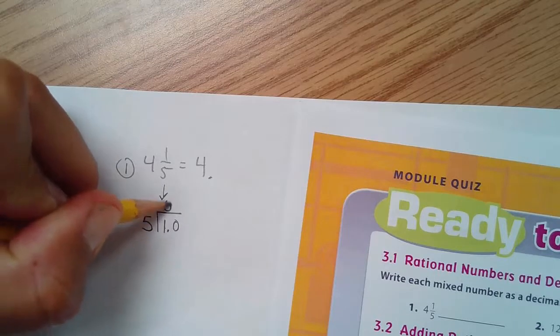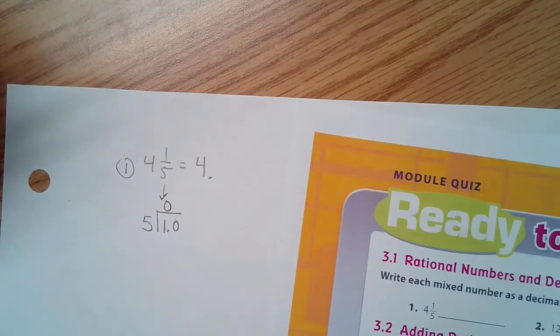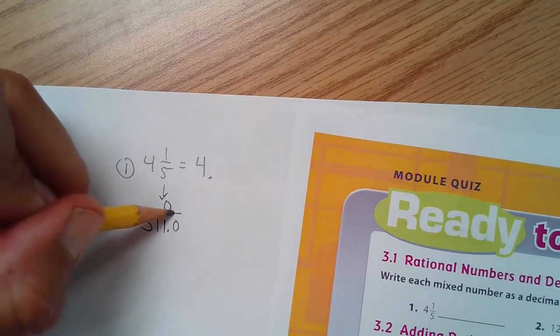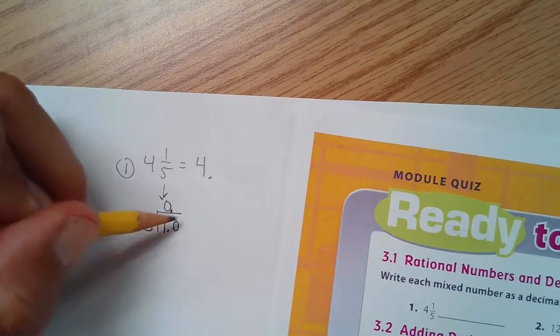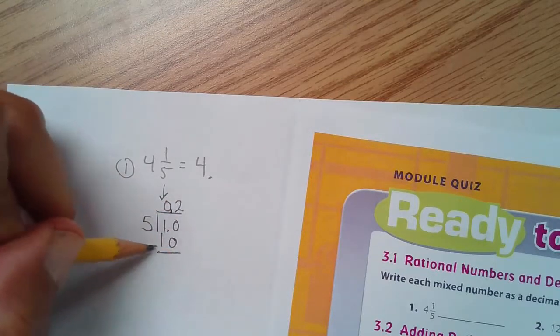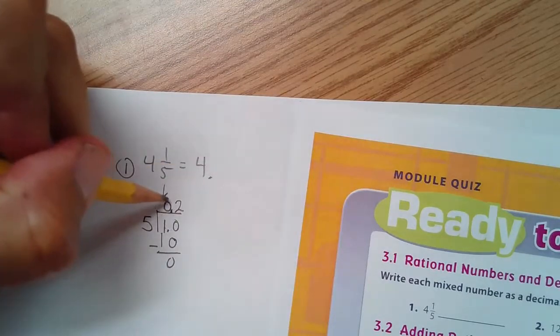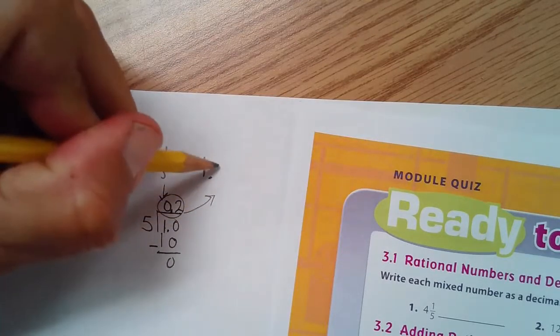Five is not going to go into one. When I divide, I put a zero right there. Put your decimal point. Five going into ten will go two times, that is ten. So this is my other part of the decimal, 4.2.